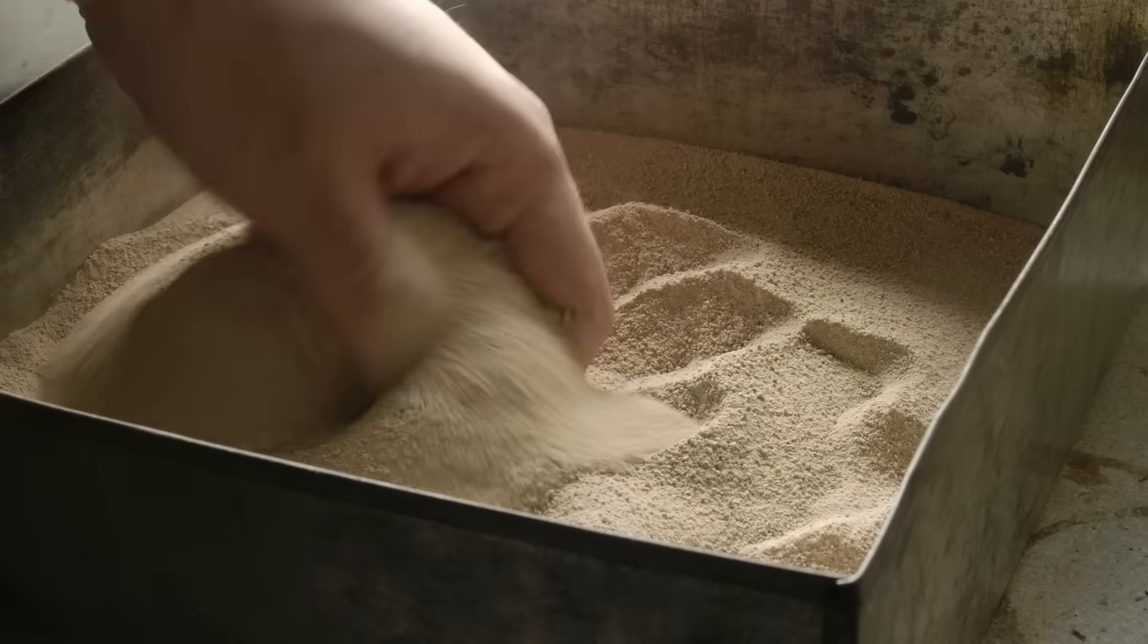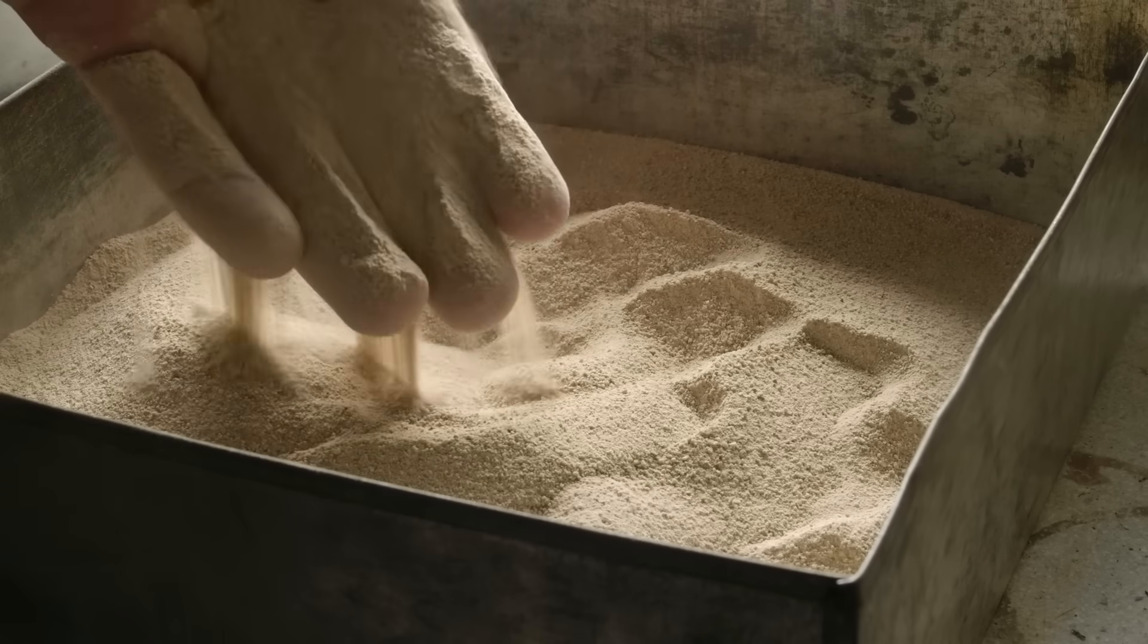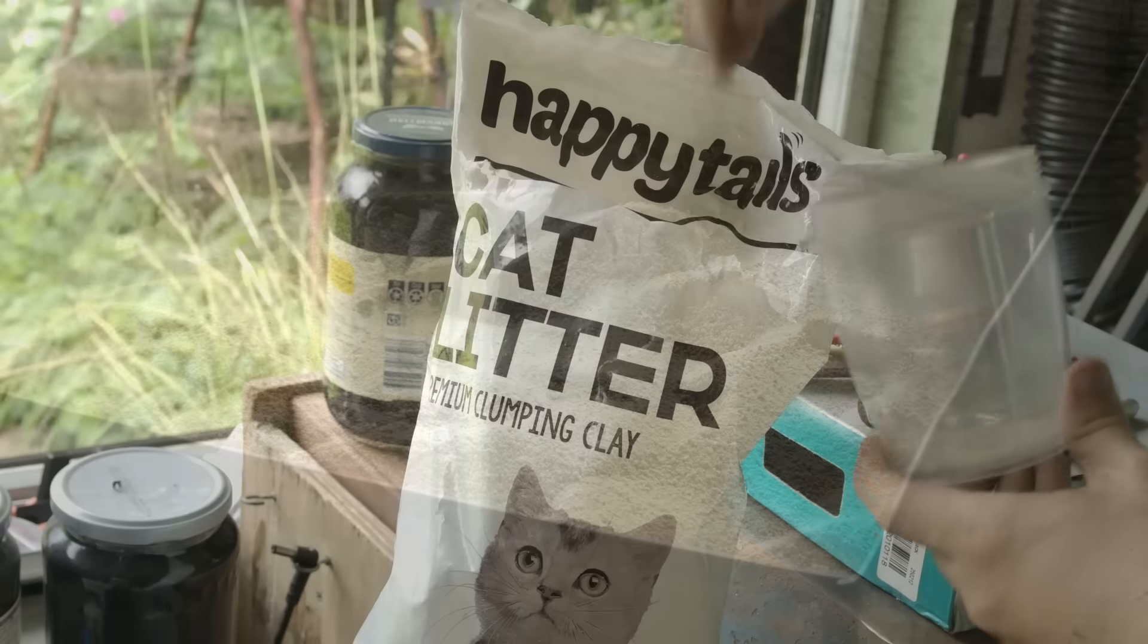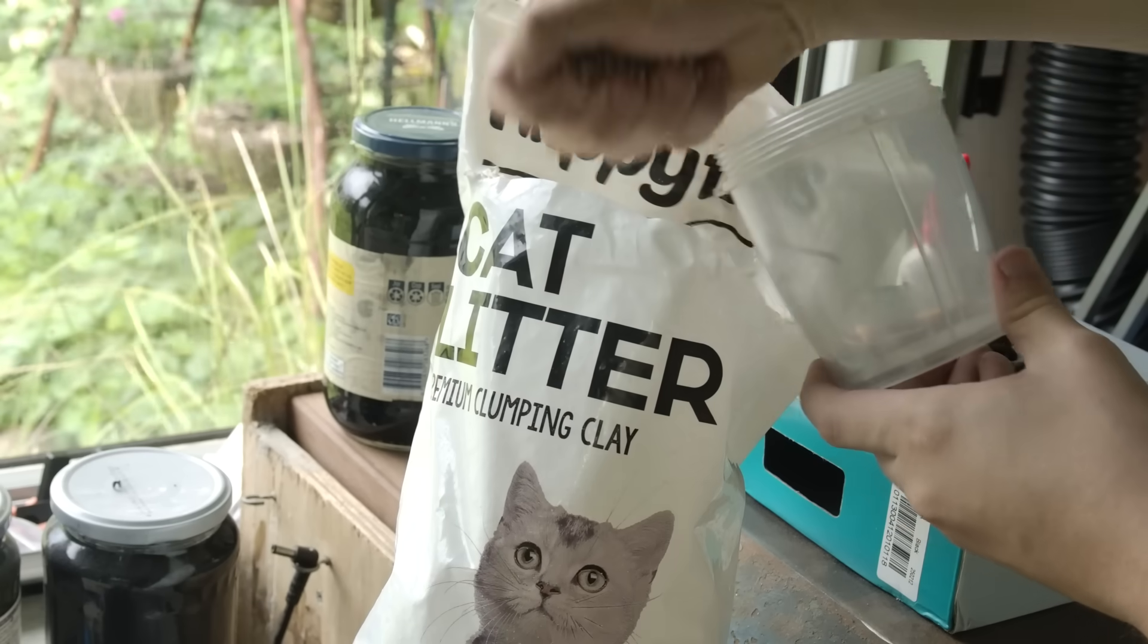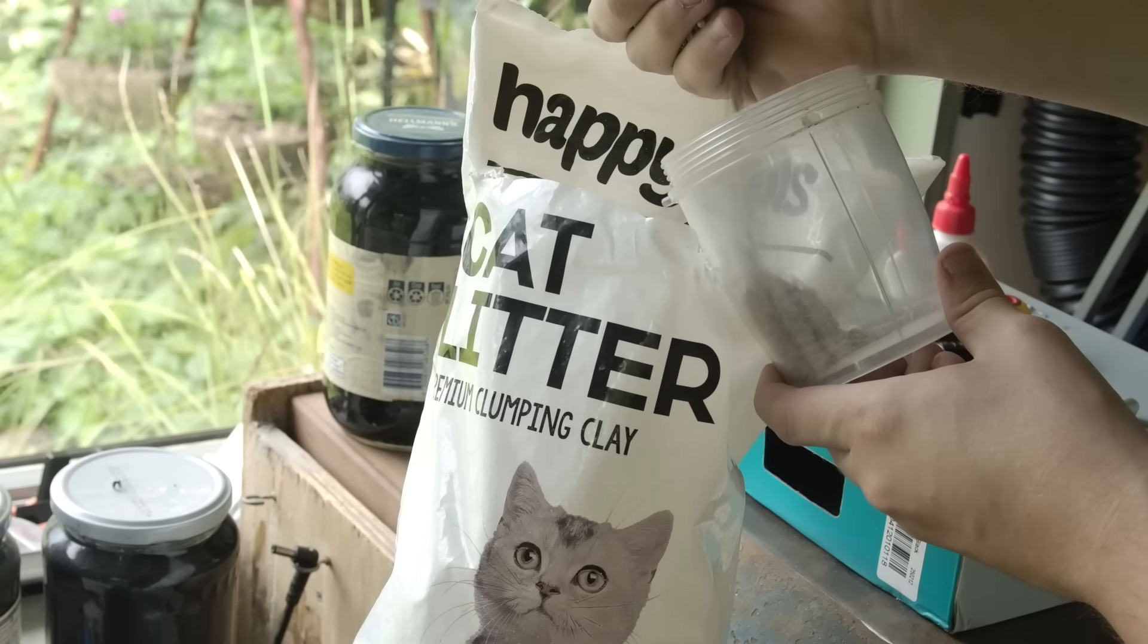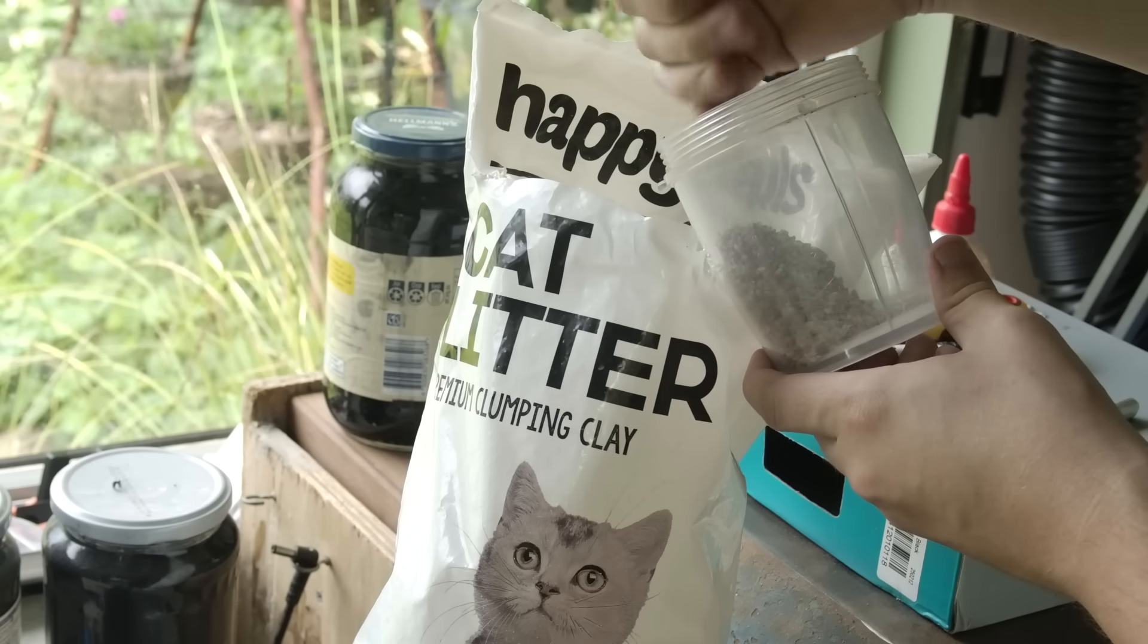There's a good chance you can just buy powdered bentonite clay locally, but if you can't, it can instead be obtained by crushing clumping clay kitty litter. This bag cost me $4, and after running it through a blender, I was left with perfect clay dust.